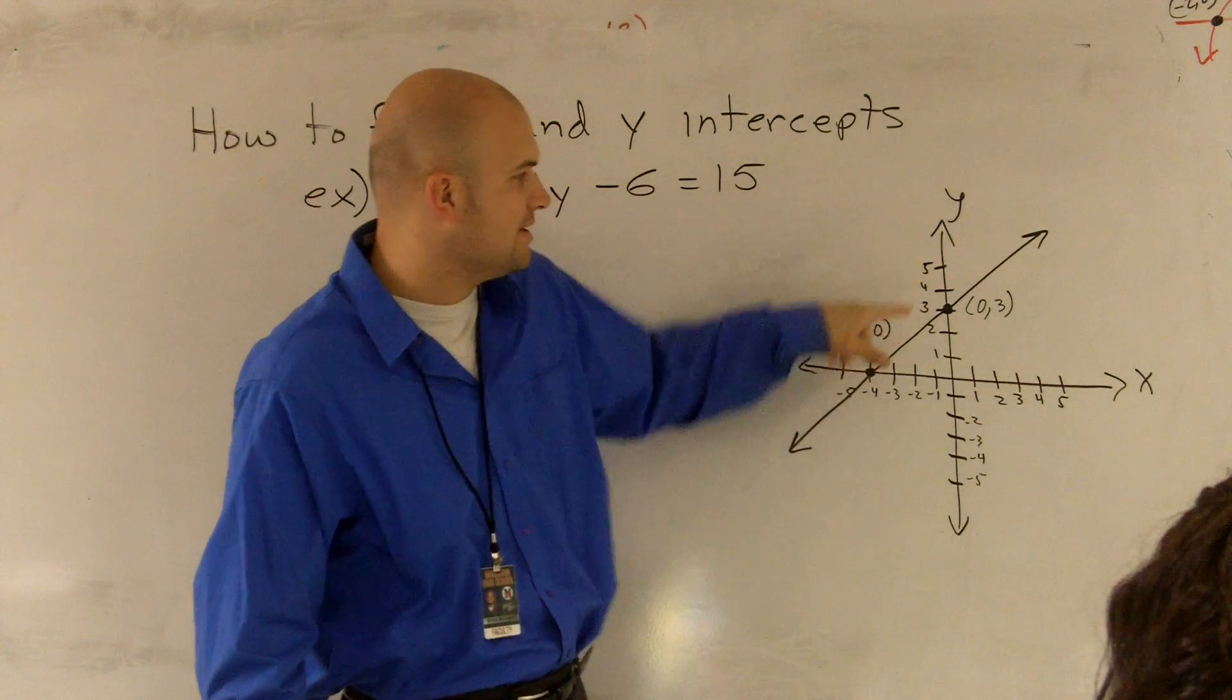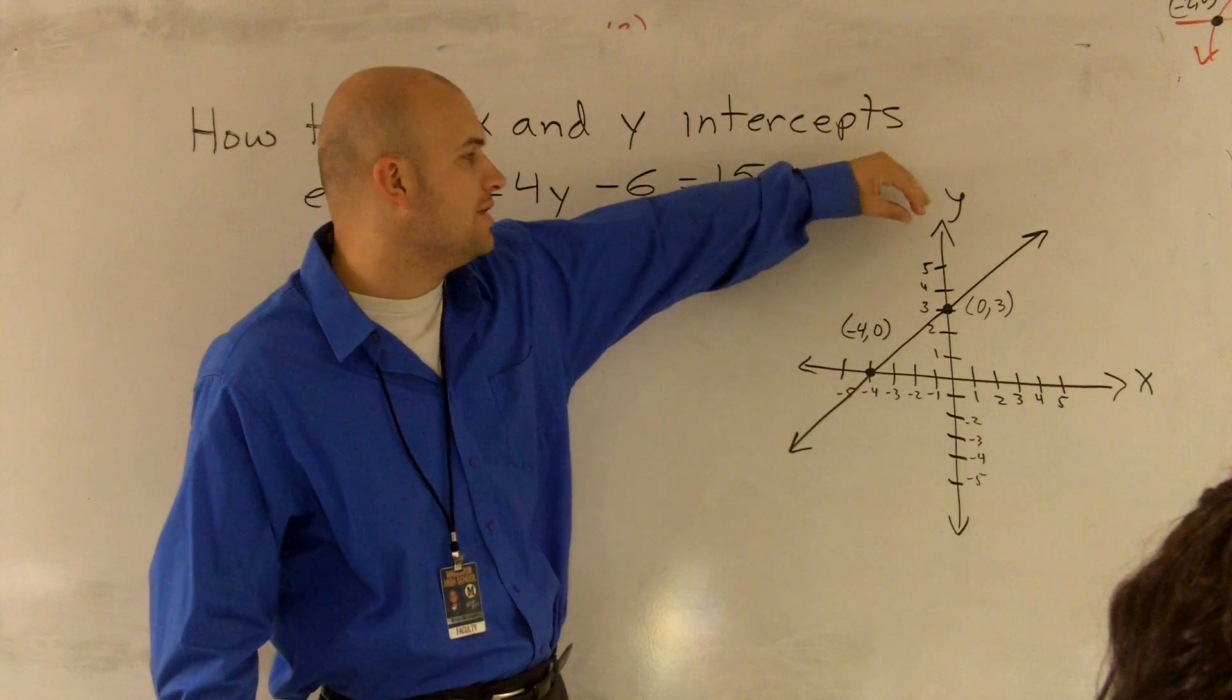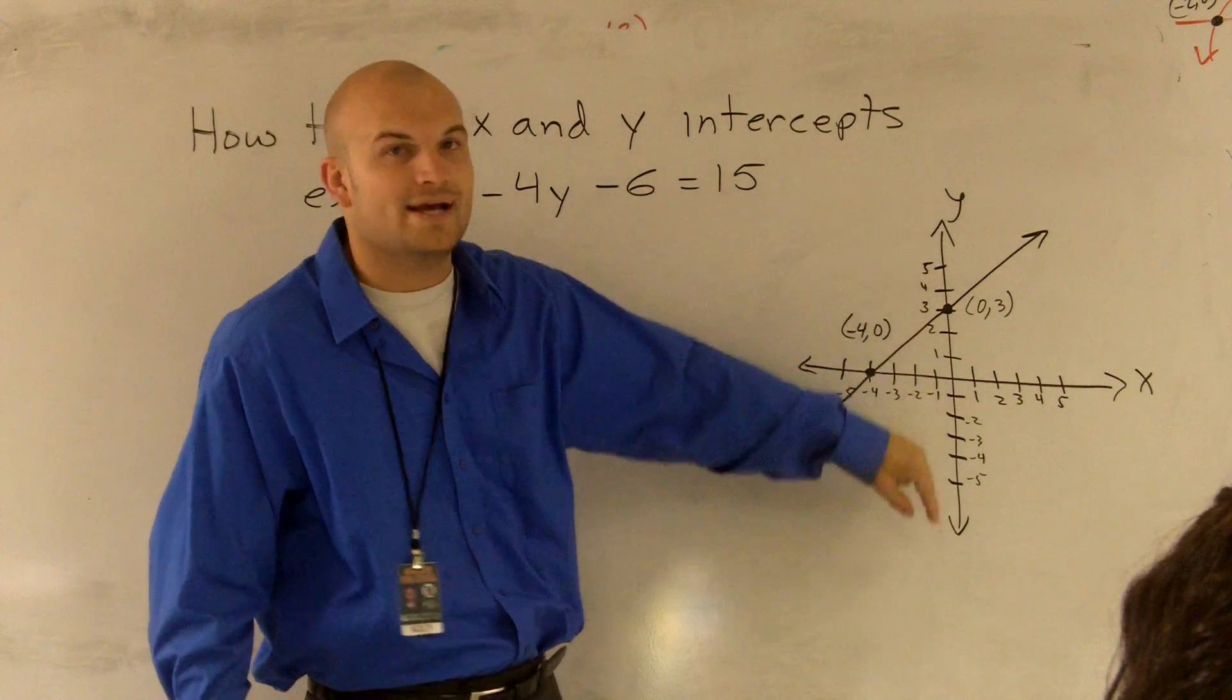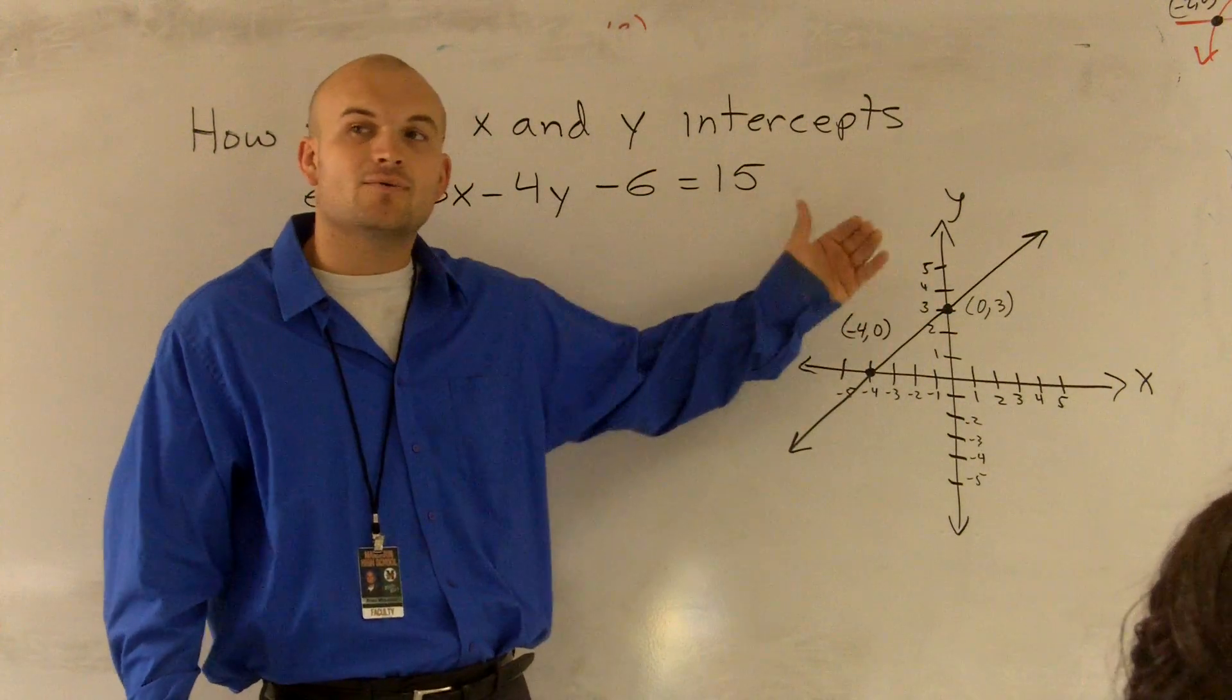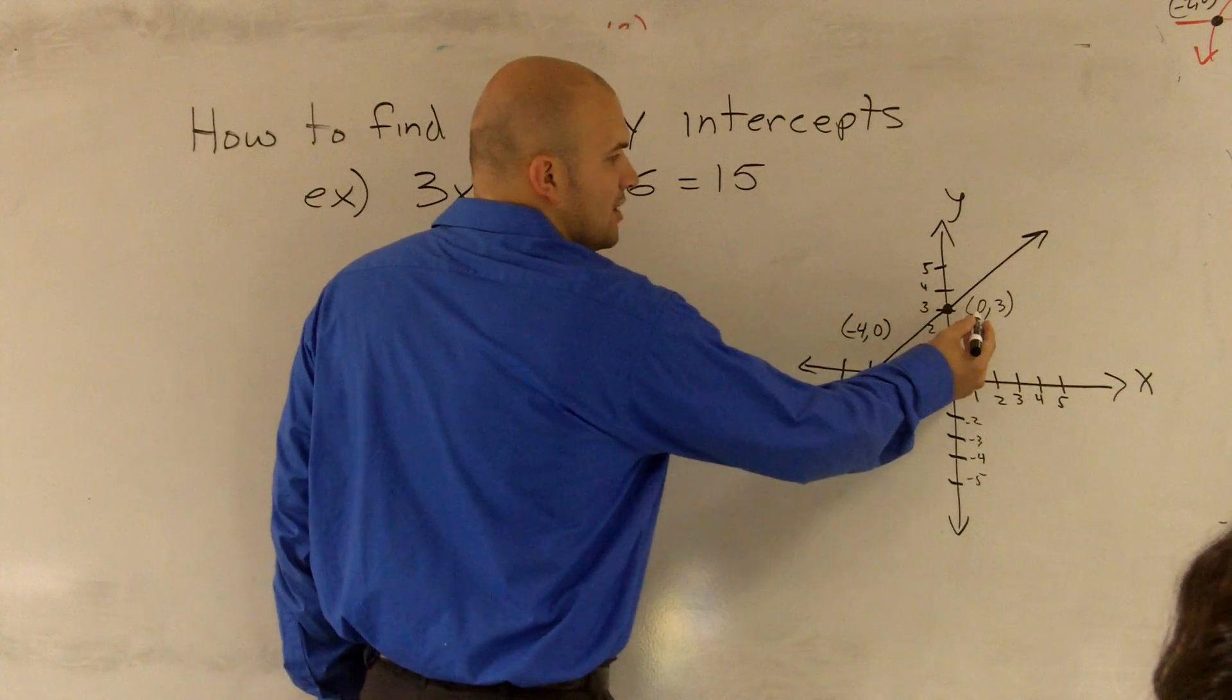If you notice when you have a graph written up here, where a graph intersects your y-axis, we call it your y-intercept. At your y-intercept, you have an x-value of 0.